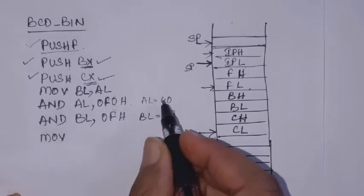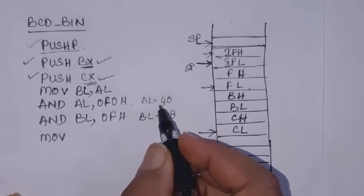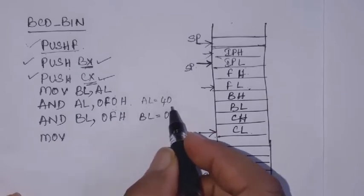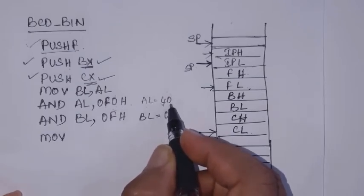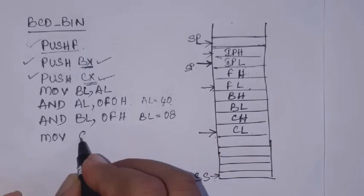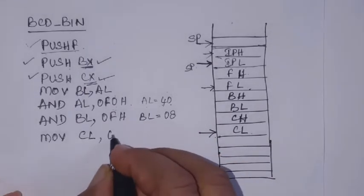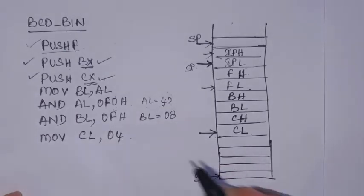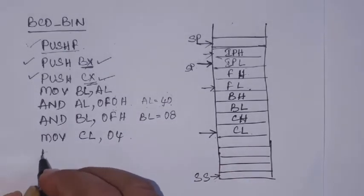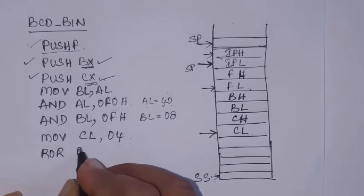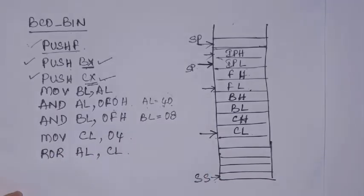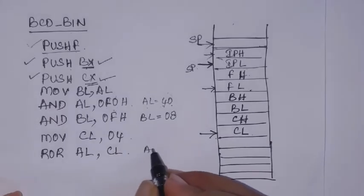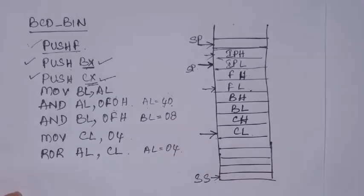To get 04 from 40, we need to rotate right 4 times to swap the nibbles. MOV CL with 04 as the count. Then ROR AL, CL. After this instruction, AL will contain 04H.